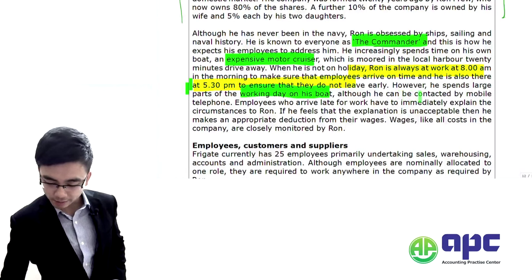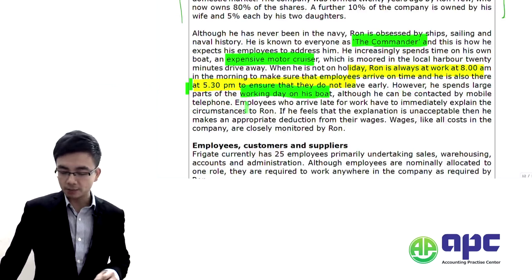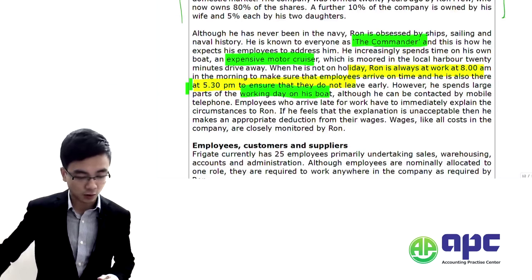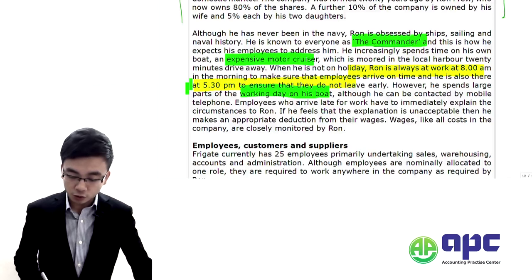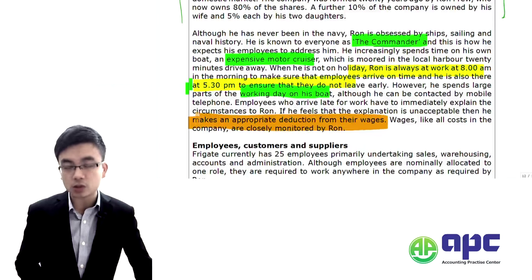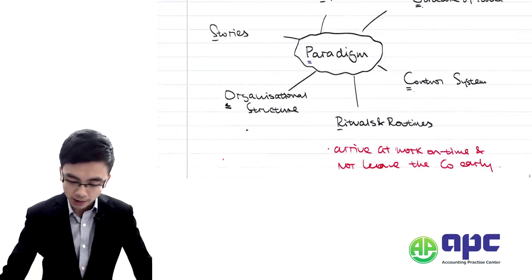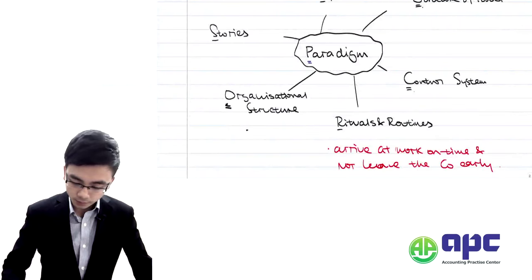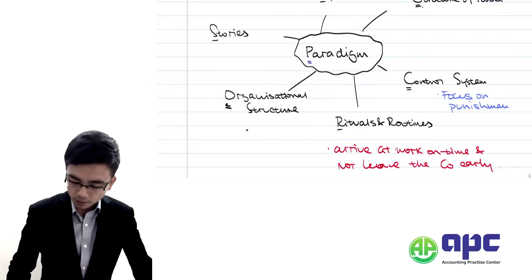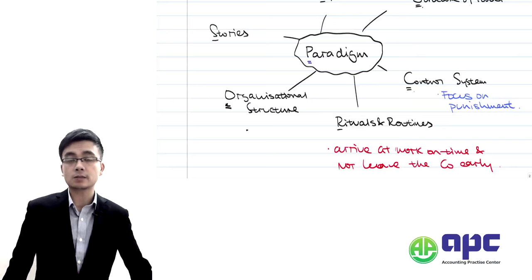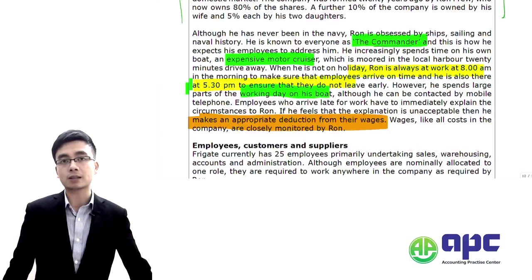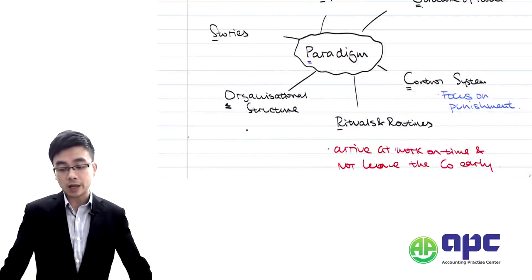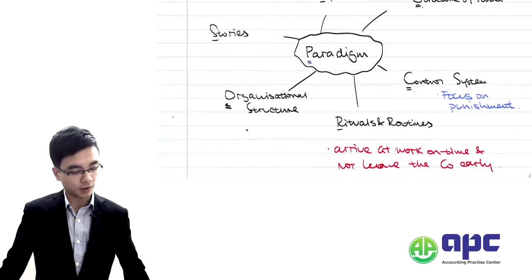Employees who arrive late for work have to immediately explain the circumstances to Ron. If he feels the explanation is unacceptable, he makes an appropriate deduction from the employee's wages. That is the control system, which here is focused on punishment. This will likely not motivate employees within the organisation — you can make that point in the exam.